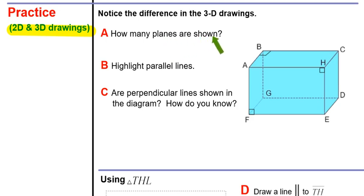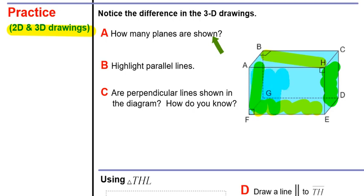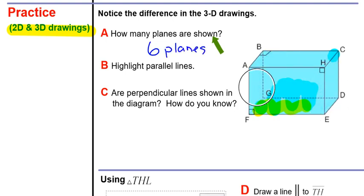The first question asks how many planes are shown. Looking at this big box, you have the one on the top and the bottom, the one on the left and the right, and then the tricky one — the one on the front and the one in the back. So for this box, we have six planes shown.